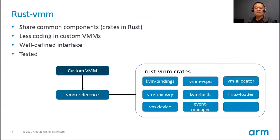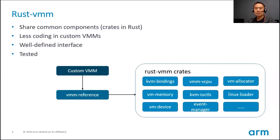RustVMM is a collection of Rust crates. A crate is a building block in Rust, like a library in C. These crates are well designed and tested. To build a new VMM, you only need to write the least code for combining these crates and customizing. Here are some examples: Linux Loader is used for loading the guest kernel, and VM Memory is for managing guest memory. In the future, building your own virtual machine monitor should be further simplified by using VMM Reference, a new crate of RustVMM introduced several months ago.